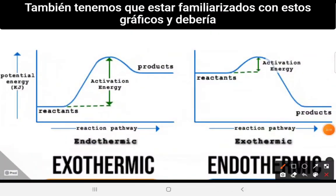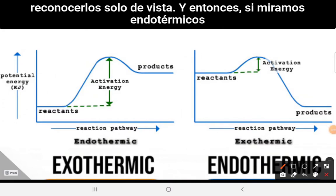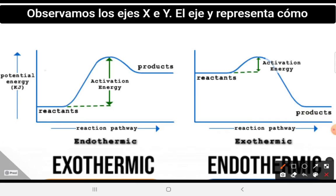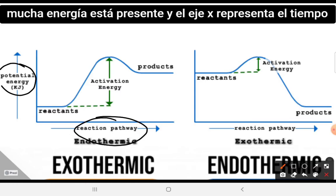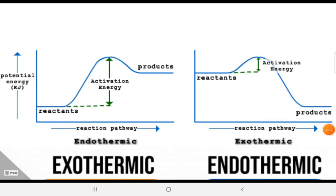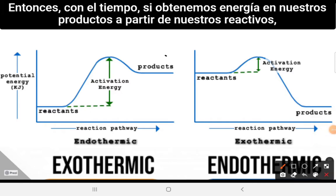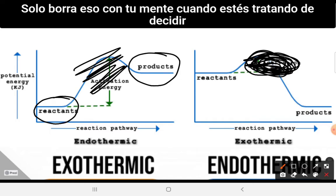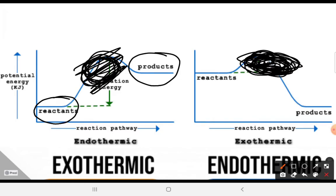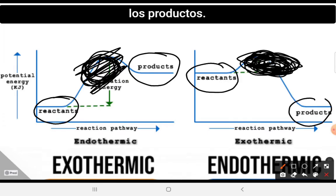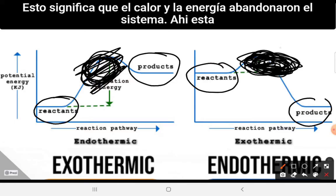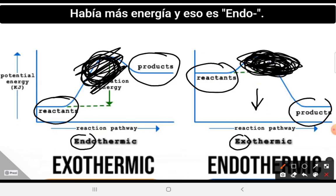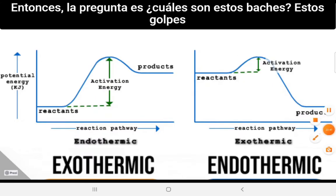We need to recognize these energy graphs by sight. The y-axis represents energy present; the x-axis represents time or reaction pathway. If products have more energy than reactants, the reaction is endothermic. If reactants have more energy than products, energy left the system — that's exothermic. The bumps on these graphs are called activation energy.